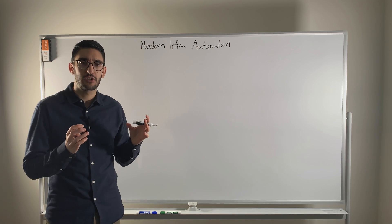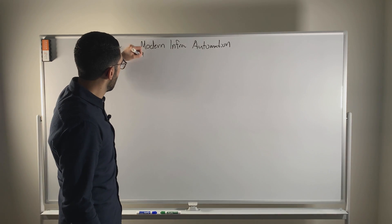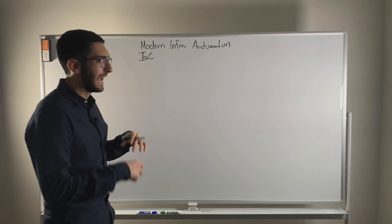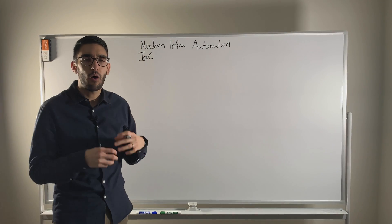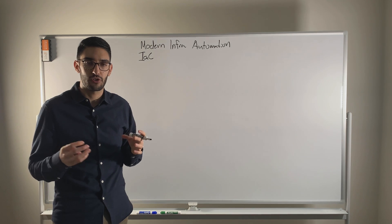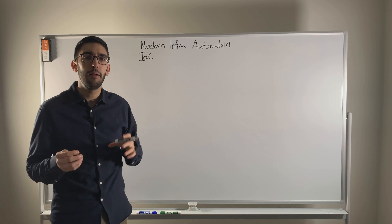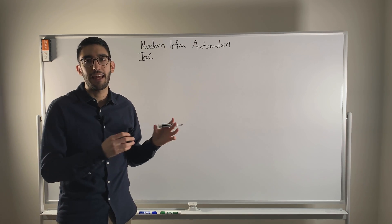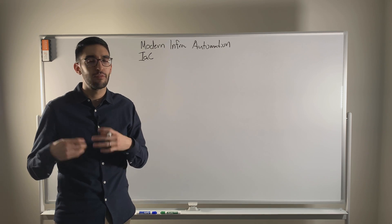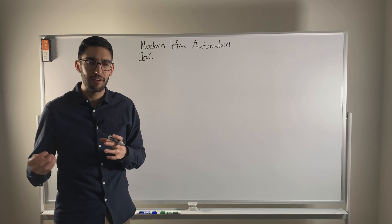One is this notion of infrastructure as code. When we talk about infrastructure as code, it's the idea that we're going to capture all the aspects of the process of managing our infrastructure — defining it, configuring it, et cetera — in a codified way. That allows us to automate against it, apply version control, and get all these great benefits.